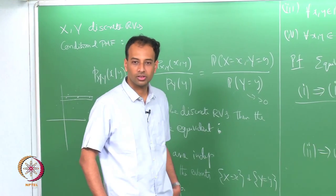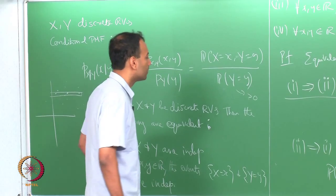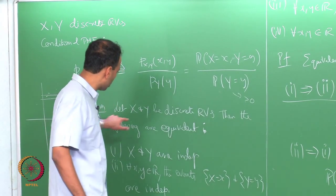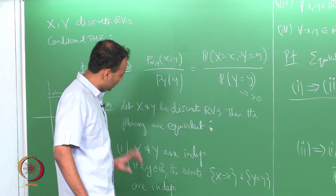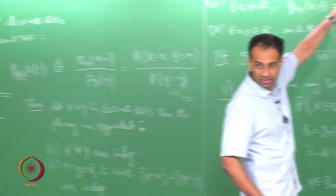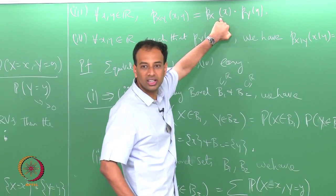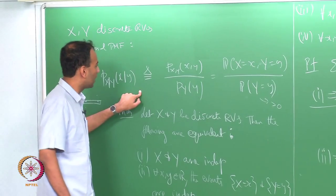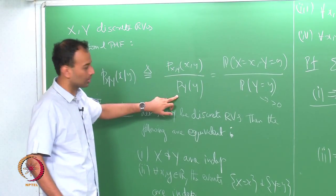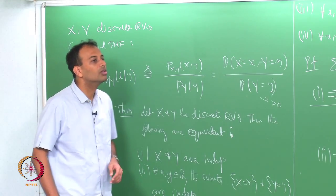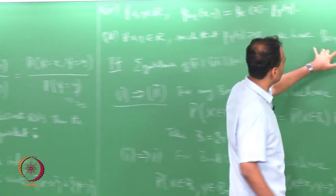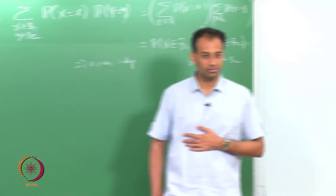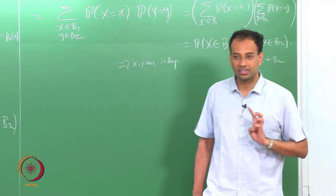Are there any questions on this? What we have said is that if you want to talk about independence of discrete random variables X and Y, it is good enough to verify that the joint PMF factorizes into the marginals. That is equivalent to saying X and Y are independent. And if the conditional PMF equals the unconditional PMF, that also says X and Y are independent. Discrete random variables are very easy.